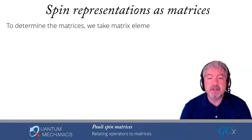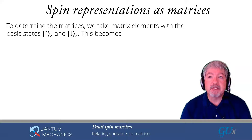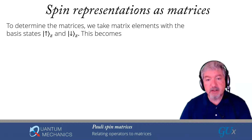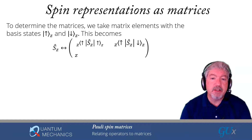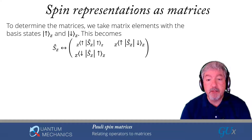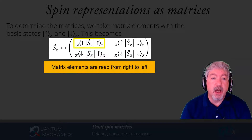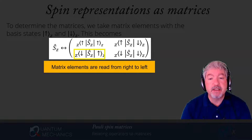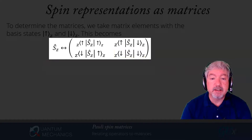The way we determine the matrices is we take the matrix elements of the state vector after it's been acted on by the operator, then decompose that into a vector expressed in terms of the original basis. We have a two-by-two matrix because we're in a two-dimensional space, with four matrix elements: up|Sc|up, up|Sc|down, down|Sc|up, and down|Sc|down, where all vectors are oriented in the z-direction.